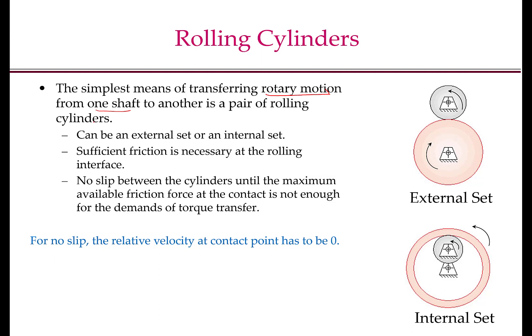A pair of rolling cylinders can be an external set where the contact between the two cylinders is on their external surfaces, or an internal set where the contact is between the external surface of one cylinder and the internal surface of another hollow cylinder. For external sets, the direction of rotation of the two shafts will be opposite to each other, whereas for internal sets, the direction of rotation will be the same.